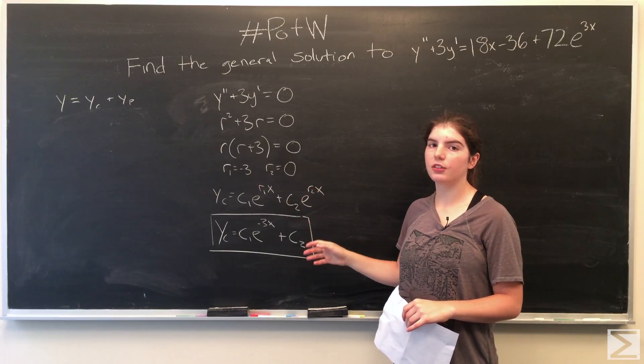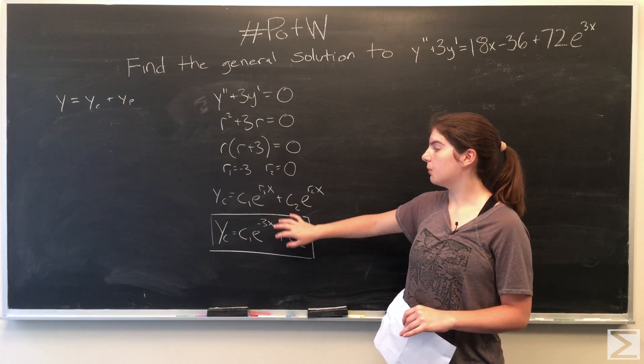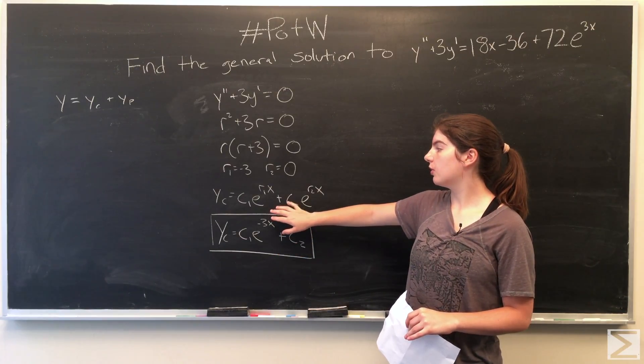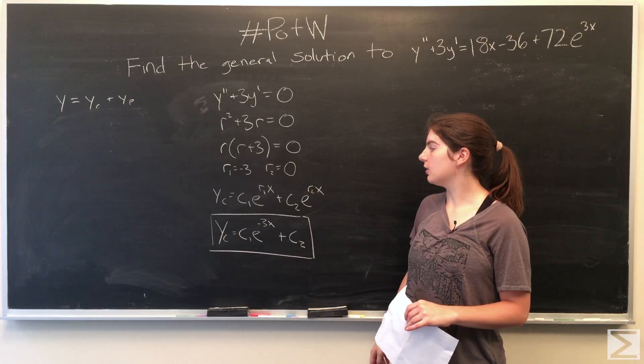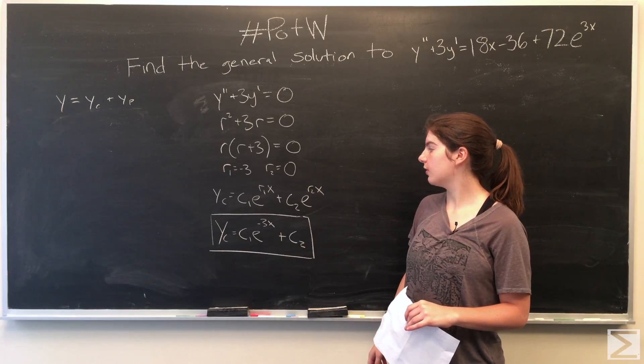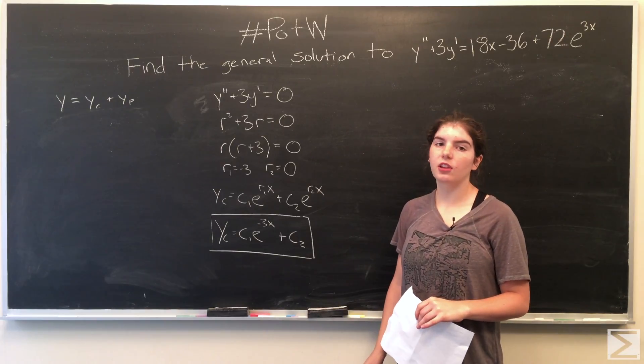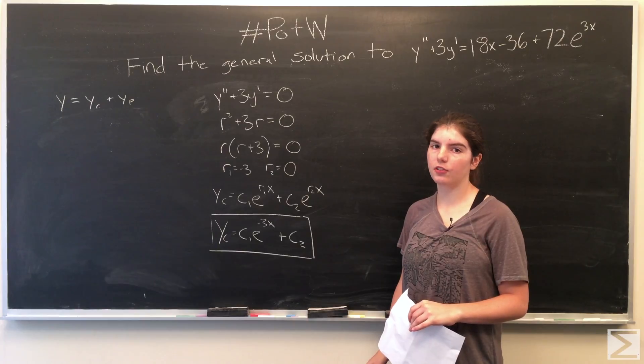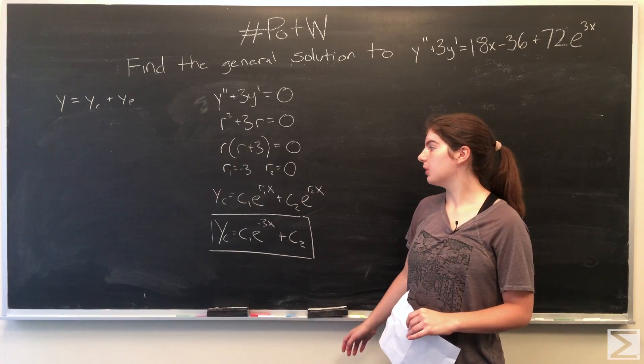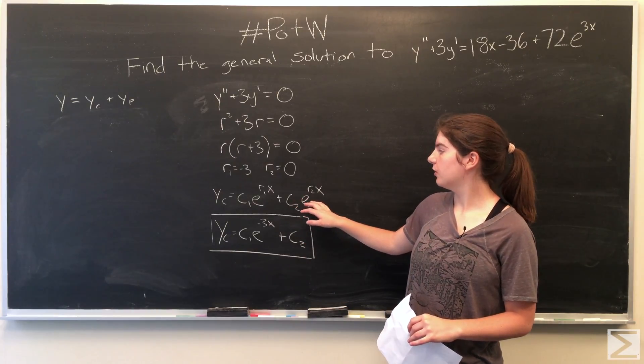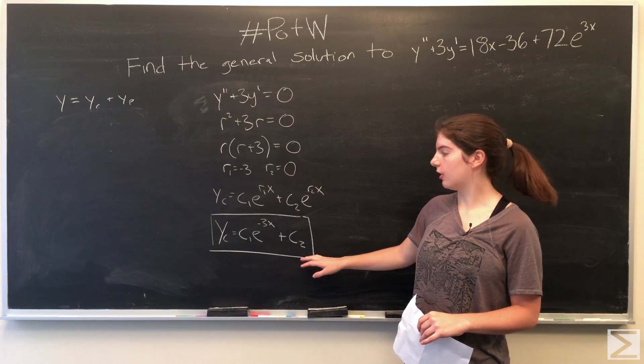This equation has two real distinct roots. And since it has two real distinct roots, the complementary solution is written as y sub c equals c sub 1 times e to the r sub 1x plus c sub 2 times e to the r sub 2x, where c sub 1 and c sub 2 are constants, and r sub 1 and r sub 2 are the two roots. When we plug in negative 3 and 0 into this equation, we get our complementary solution.